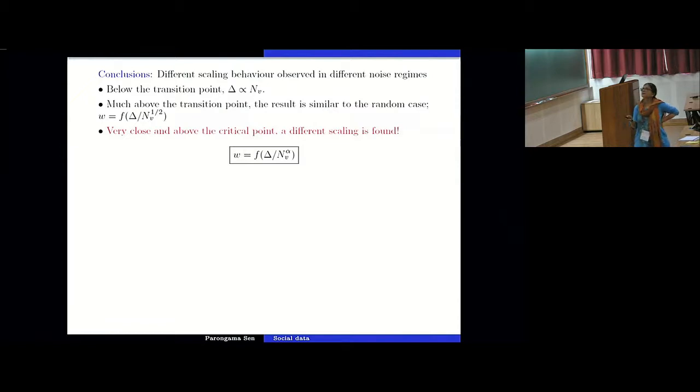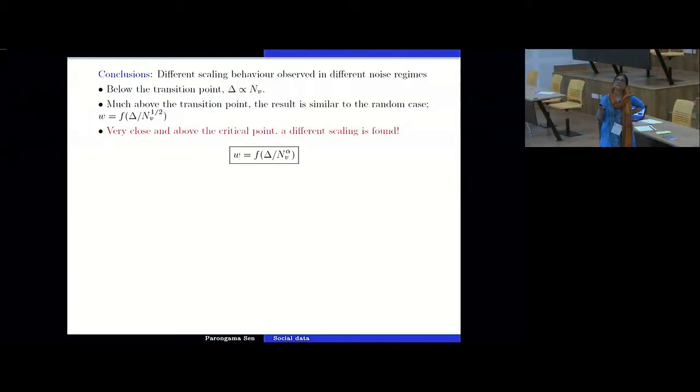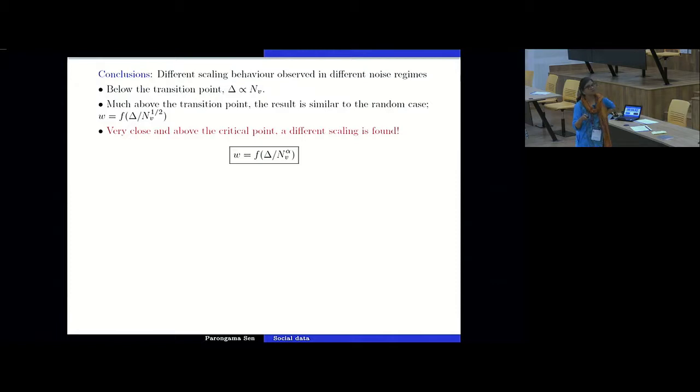Okay, so basic conclusion is that as I told you that the scaling behavior emerges to be the important issue. And let me give you the detail. Below the transition point, we found that there is a linear behavior. This explains the cases when delta is quite large. It is far from the critical point. And much above the transition point, the result is similar to the random case. This is also expected. But very close and above the critical point, the different scaling is found. And this alpha, as I told you, turns out to be around 0.7. So it is a new kind of scaling. And let me also tell you that this alpha value was almost independent of the two models which we chose, which is around 0.7.